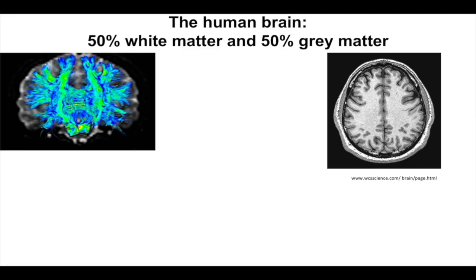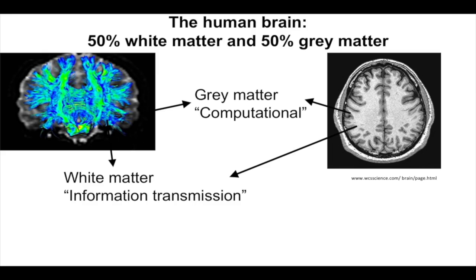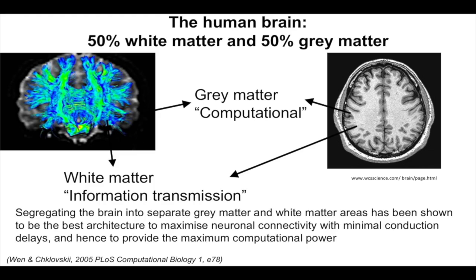Our human brain is actually equally divided: gray matter, which is the computational part where neurons lie and where most neuroscientists focus, and white matter — the other half — where information is transmitted between brain areas. Computational analysis shows this architecture maximizes neuronal connectivity with minimum conduction delays, providing maximum computational power.